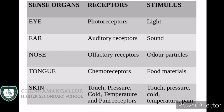If you take the eye, the receptors are photoreceptors and the stimulus is light. If you take the ear, auditory receptors — the stimulus is sound. What about the nose? Receptors are olfactory receptors; stimulus is odor particles or smell-producing particles. If you take the tongue, the receptors are chemoreceptors and the stimulus is food materials.